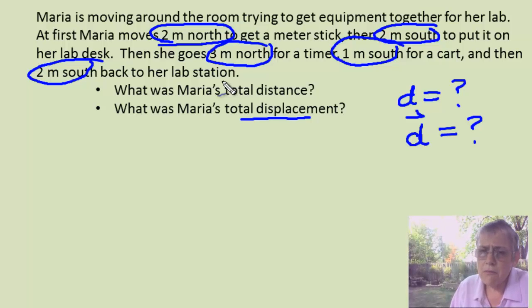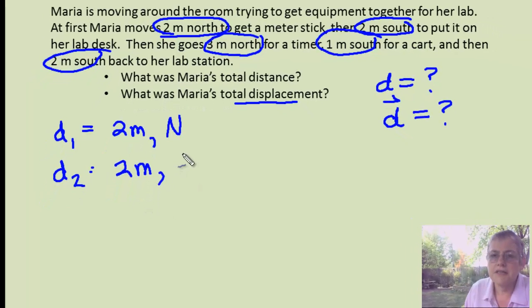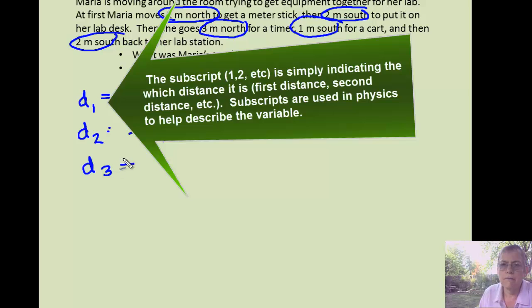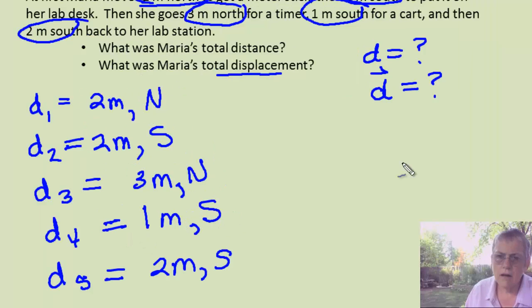Once I've found the stuff in the problem, I want to list it out so it's clear. And so I've got all these different distances. In fact, I've got five of them. So I have to have some way of distinguishing between each one. So I'm going to probably say D1 is the first one. And that's two meters. And I'm lazy. I don't want to write out north. So I'm just going to use a capital N. Distance two, that's equal to two meters. And again, I'm lazy, so I'm just writing capital S for south. D3, that's three meters. And that's north. Distance four, that's one meter. And that's south. And then distance five, and that's two meters. And again, that is south.